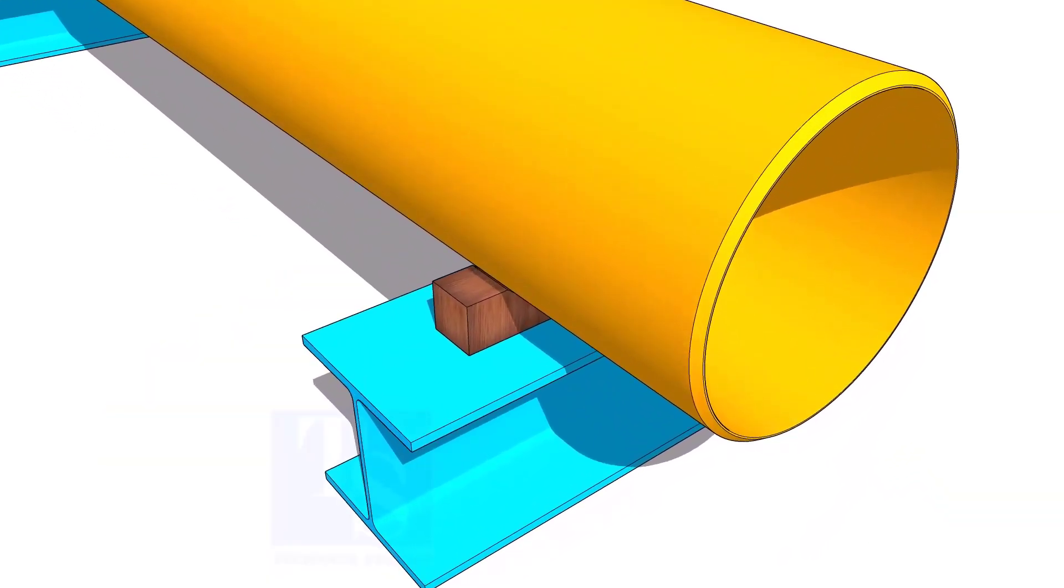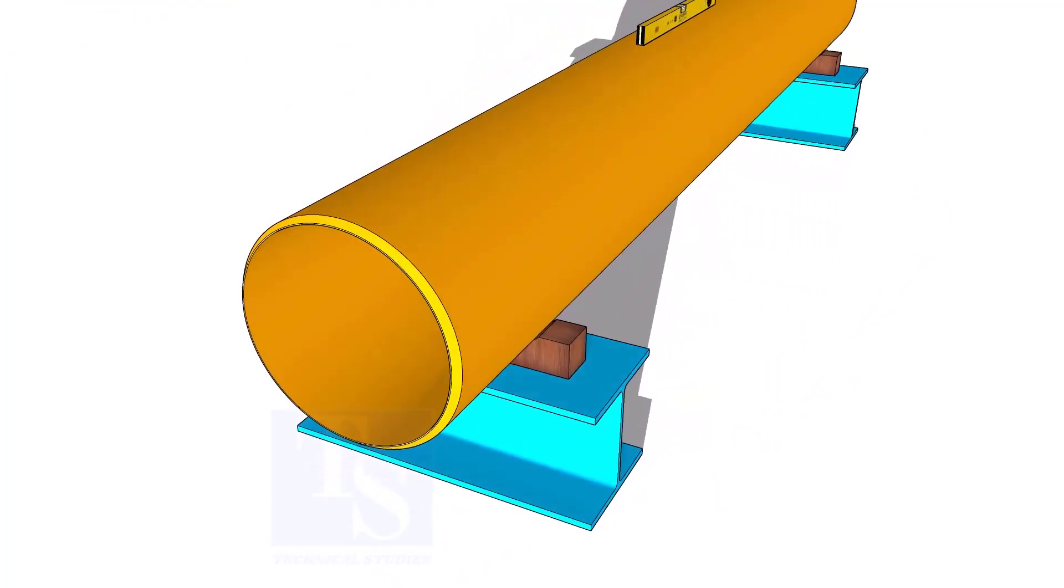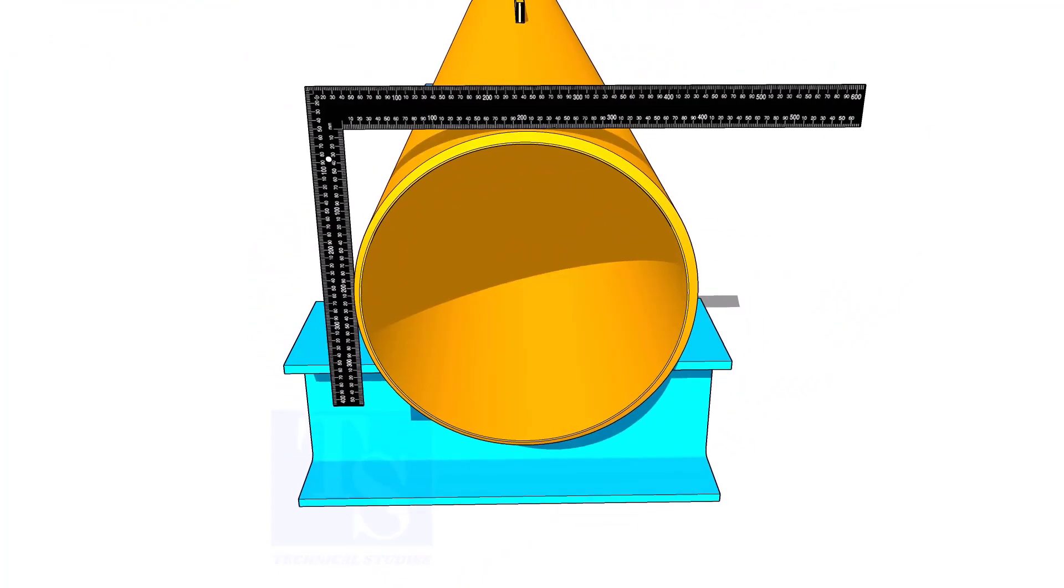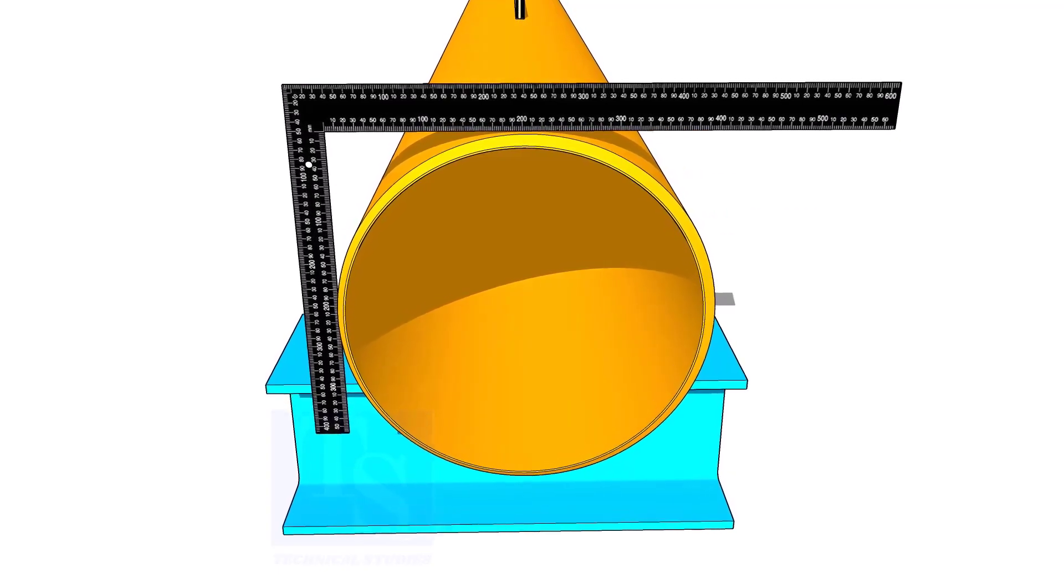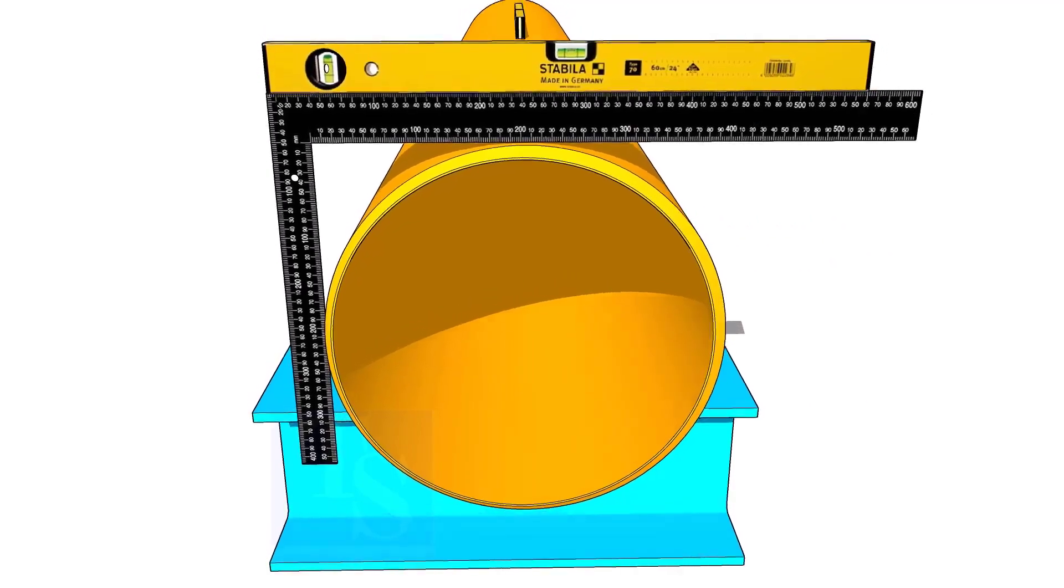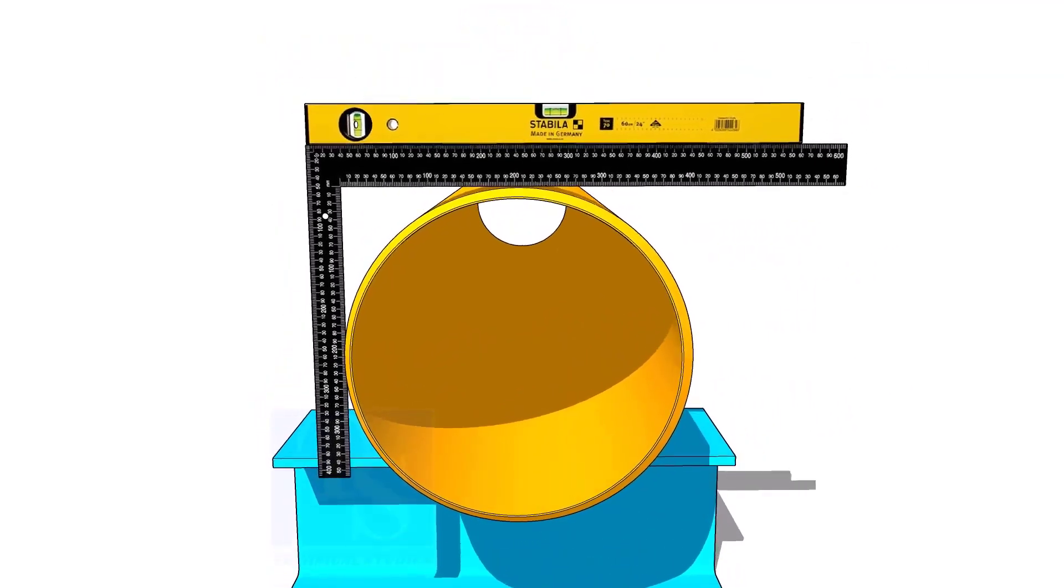Level the pipe and put packing. Put a right angle and a level bottle on the pipe as shown. Make the right angle top face level.